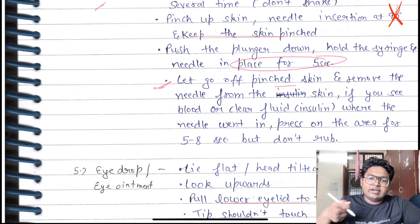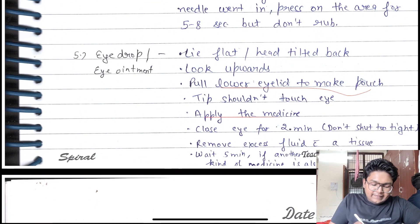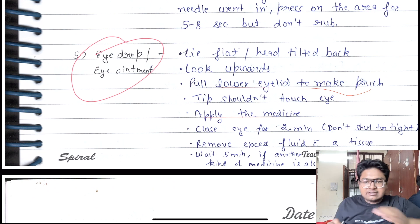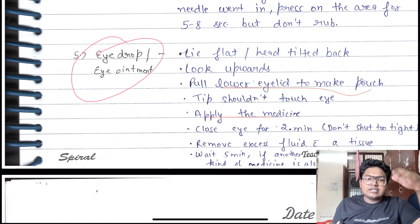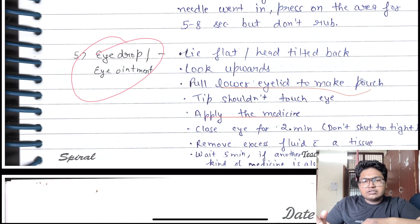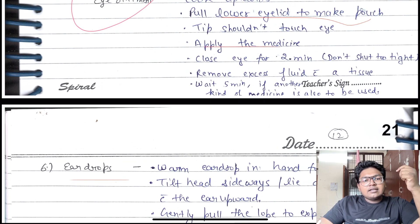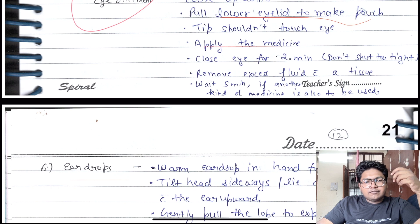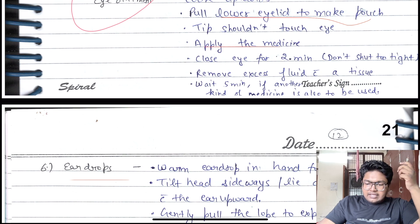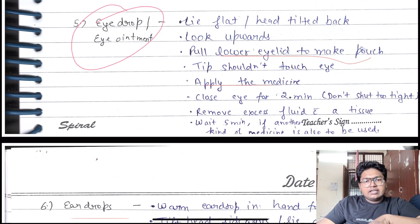Eye drops: lie flat with head tilted back, look upward, pull lower eyelid to make a pouch. The tip shouldn't touch the eye. Apply the medicine, close the eye for two minutes - don't shut the eye too tight or too light. Remove excess fluid with a tissue. Wait for five minutes if another medication is to be applied and repeat.